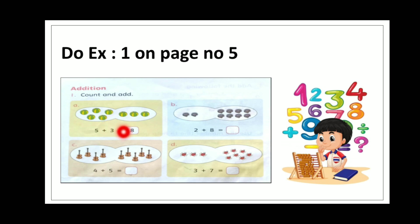In part B, let's count and add the shells. Two shells plus eight shells are equal to how many shells? Ten. Ten shells. Now write down ten in the box.